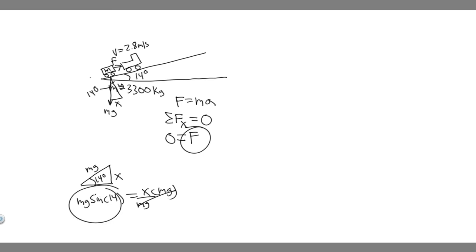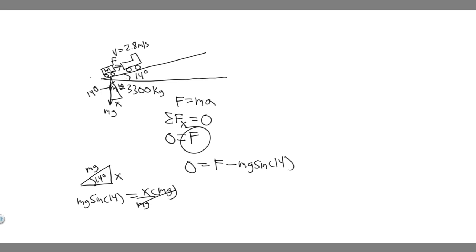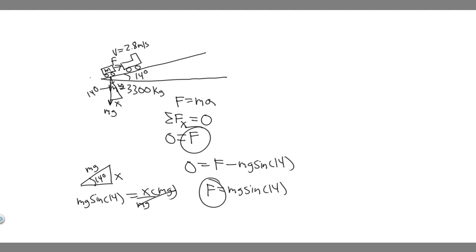Now we take the sum of the forces in x: zero equals the tractor force minus mg times the sine of 14. It's minus because gravity's x component acts in the opposite direction — downward along the incline. Adding mg·sin(14) to both sides gives us F equals mg times the sine of 14. This makes sense because if the forces weren't equal, the trailer would be accelerating, but since they're equal, it moves at a constant speed.